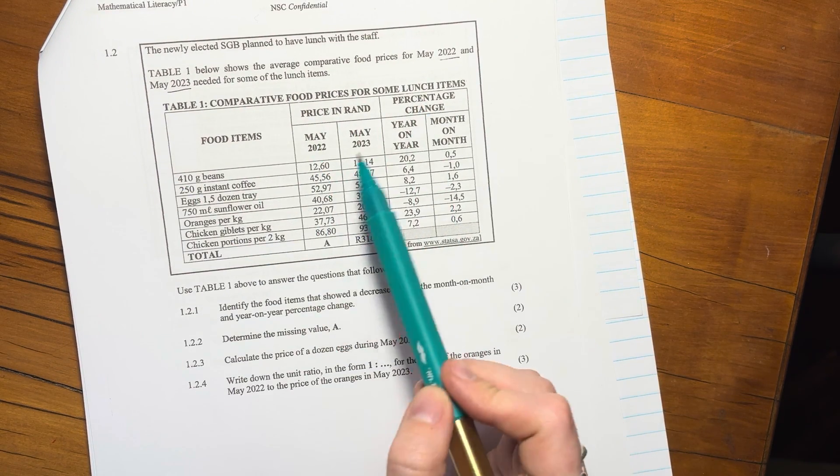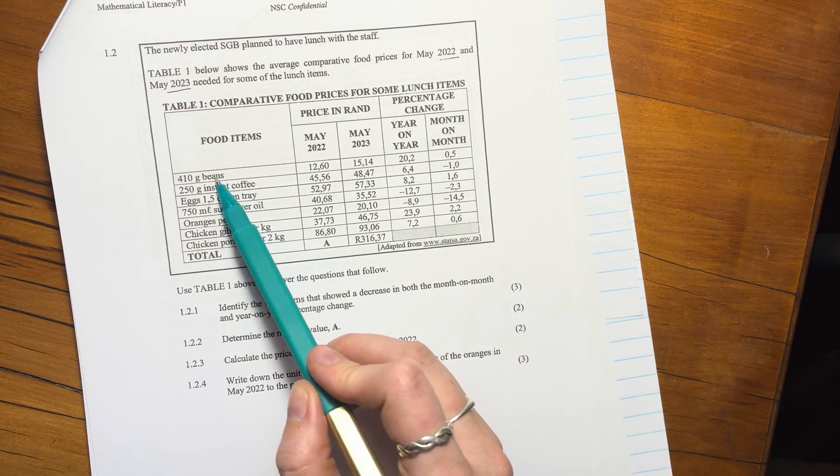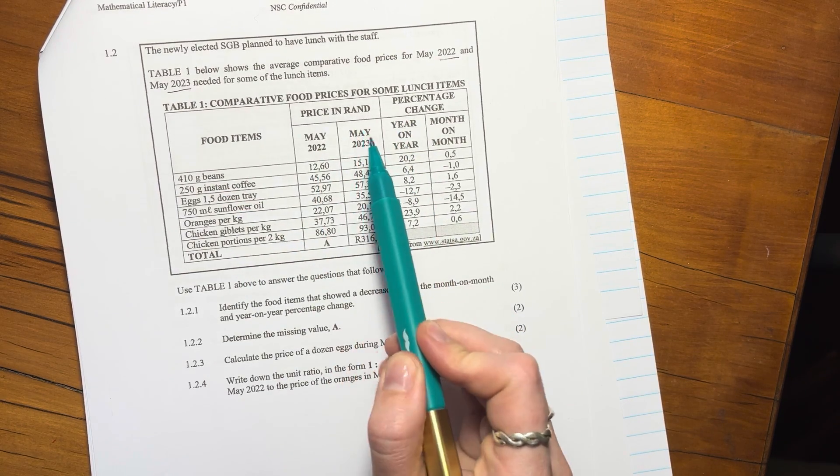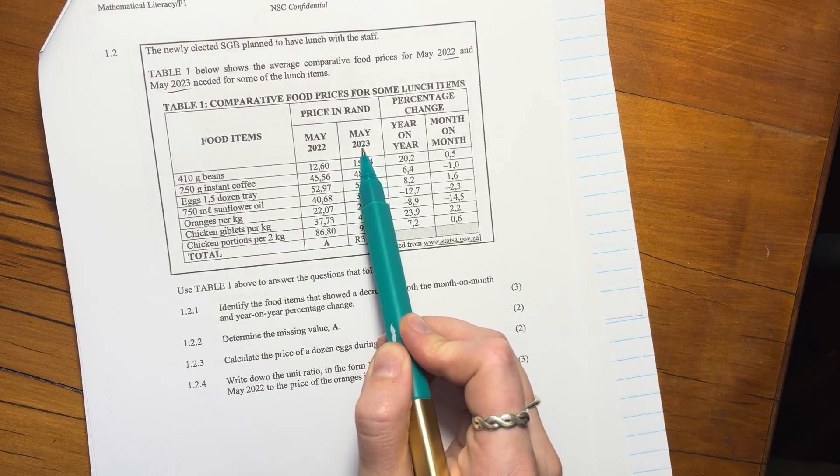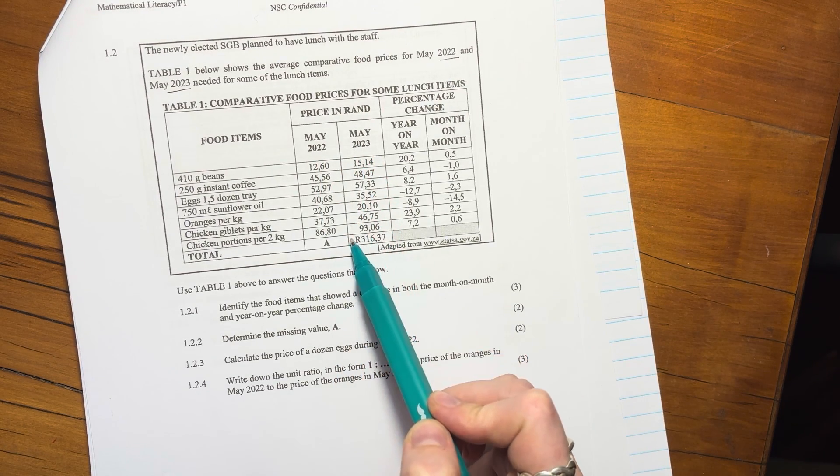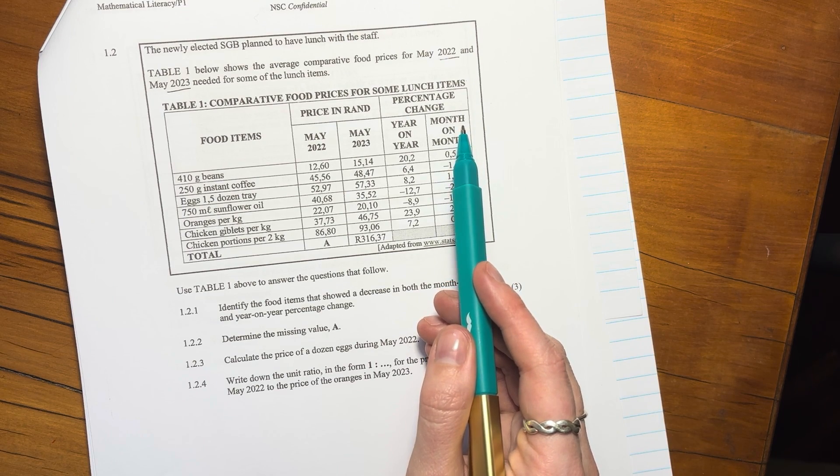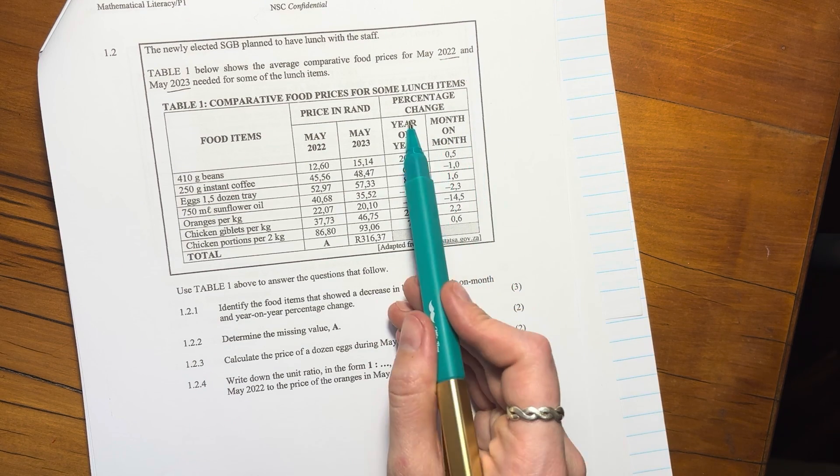Table 1 below shows the average comparative food prices for May 2022 and May 2023, so basically a year apart, needed for some of the lunch items. So let's just look at what's in the table. We have various items from beans the whole way to chicken, then you have the May price in rands in 2022 and the May price in 2023.